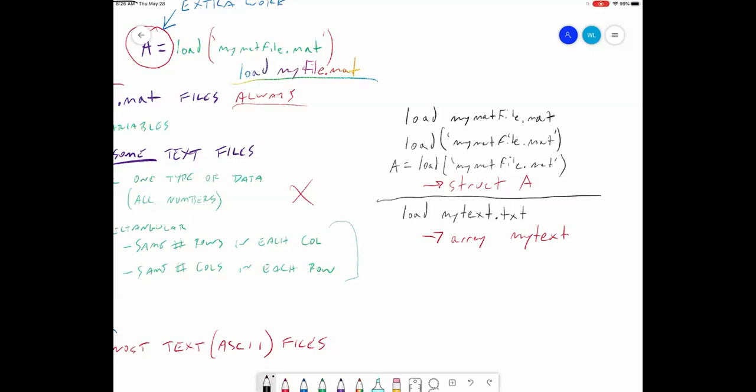If you did not want to do that, you wanted to call it something else, maybe call it SE for something else, then it'll work in much the same way. So if you do it like this, mytext.txt, it's going to save this into an array called SE, whatever you've named it here.